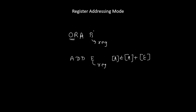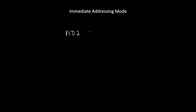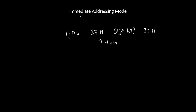So whichever instruction has an operand that is a register, its addressing mode is register addressing mode. In immediate addressing mode, the operand is going to be data. For example, ADI 37H — here ADI stands for add immediate. The data 37H gets added to the content of the accumulator and the answer is stored in the accumulator. In ADI 37H, ADI is the opcode and 37H is the operand. Since this operand is data, its addressing mode is immediate addressing mode.